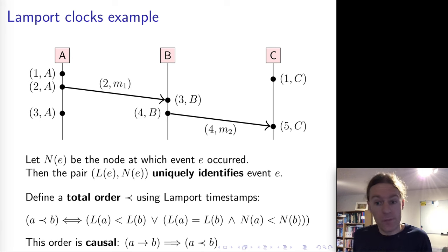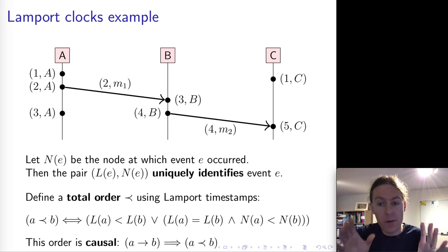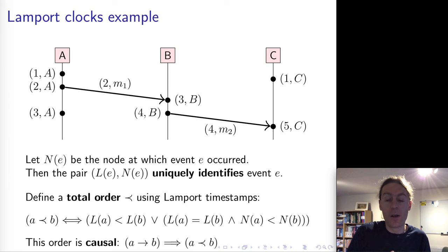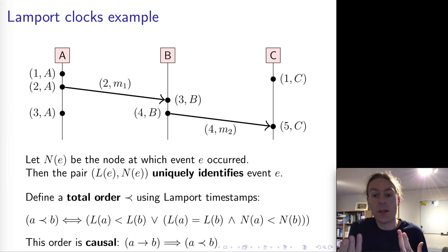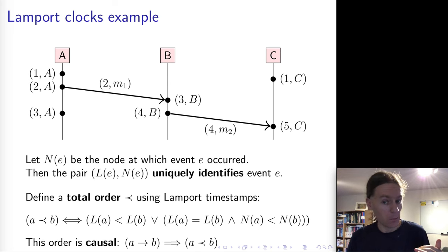Lamport timestamps give us a way of attaching timestamps to all events in a system in a way that captures happens-before relationships. We can define a total order over events using their timestamps and use those timestamps to detect the order of events. In our example of the moon being made of cheese, the first message would certainly have a lower timestamp than the reply — that is what Lamport clocks guarantee.